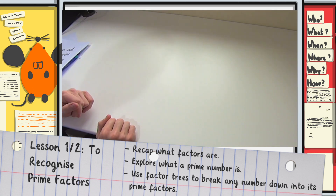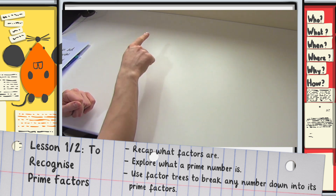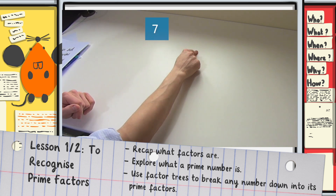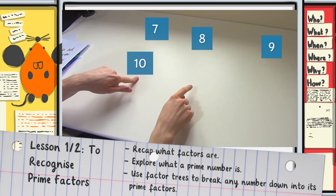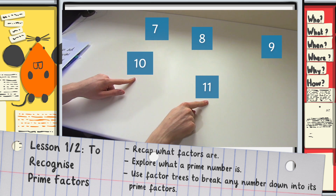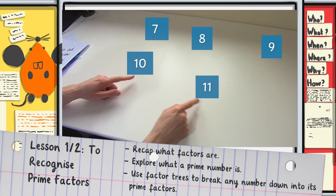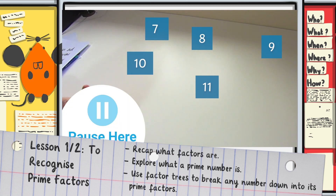Now it's your turn. Can you see if you can work out whether this, this, this, this, and this number — are they prime numbers or are they not? Pause the video here and have a go for yourself.